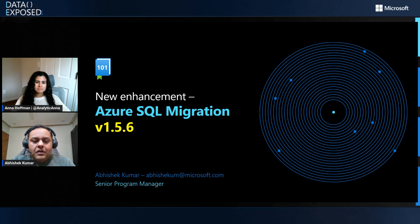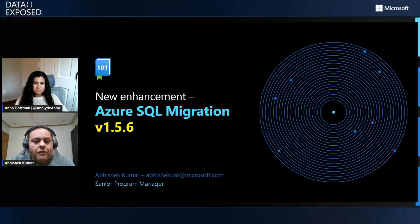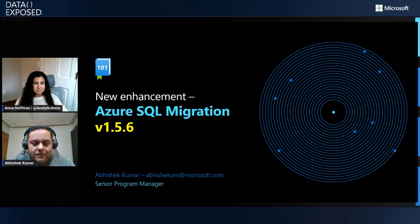In this release, I'm going to talk about three main features. The first is target provisioning based upon the SKU recommendation using ARM templates generated by the SKU recommendation. The second is support for the newly introduced next-gen general purpose service tier for Azure SQL MI instances. And the third is announcements in the login migration experience, which is in public preview.